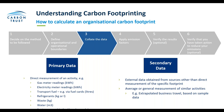Primary data is always preferential — this involves invoices from gas and electricity suppliers, meter readings and fuel card data for transport. However, it's not always possible, especially if you're in a rented building. Secondary data is accepted and can be used, such as business travel data based on sample data or a travel survey.